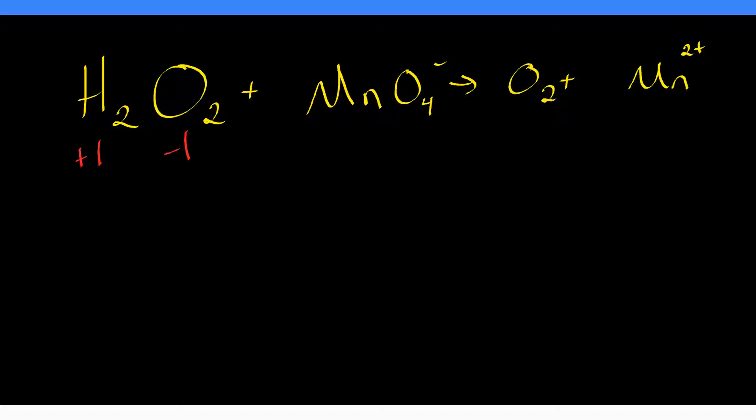Coming over here, we have permanganate, MnO4 one minus. Oxygen is negative two, and there are four of them, which gives us a total of negative eight coming from the oxygen. Then we figure out what manganese is by plugging that negative eight into the algebra formula: manganese plus negative eight equals the total charge in the compound, negative one. Solving for manganese gives us manganese equals positive seven. That is the important oxidation state of that species.